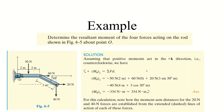We now sum up the moments about O. The 50 N force produces a clockwise (negative) moment, the 60 N force produces zero moment, the 20 N force produces a positive (anticlockwise) moment of 20 × 3 sin 30°, and the 40 N force produces a negative (clockwise) moment of −40 × (4 + 3 cos 30°). Summing all these gives −334 N·m, where the negative sign shows the resultant moment is in the clockwise direction.